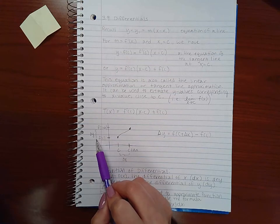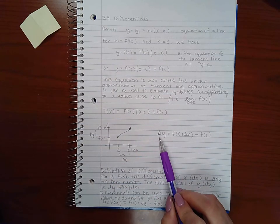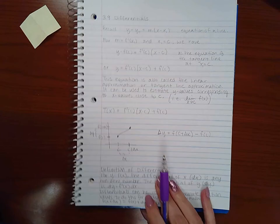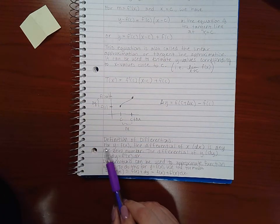The change in these y values, or the difference in these y values, is called the differential or the delta y. So you've got this measurement here which is the difference of those two. So the definition of differentials is that for y equal to f of x...